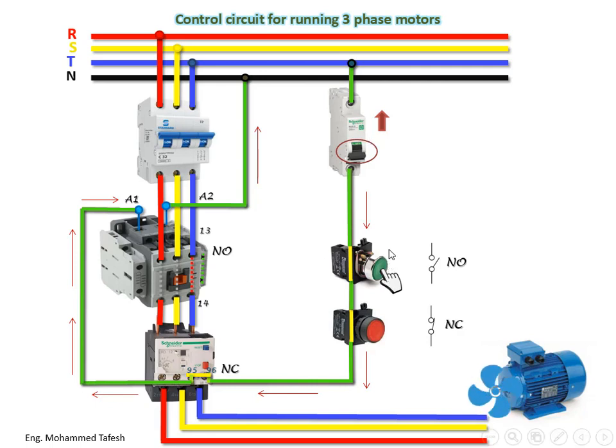If I take my hand off the push button ON, the motor turns off. Why? The push button ON changes from normally closed back to normally open, so the circuit opens and the electrical signal is cut off from the contactor coil. The main contact positions open for all three phases and return to their normal state.